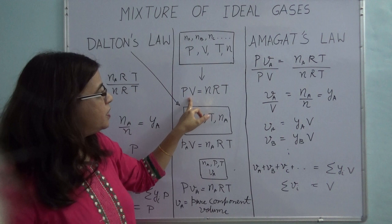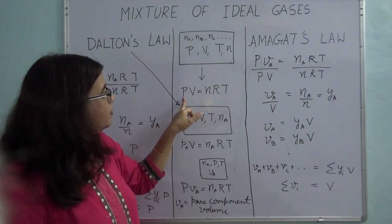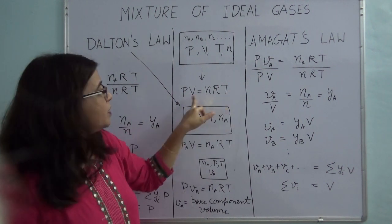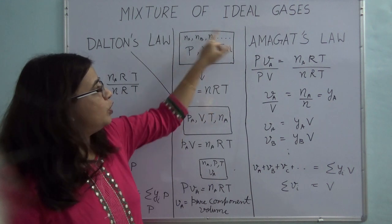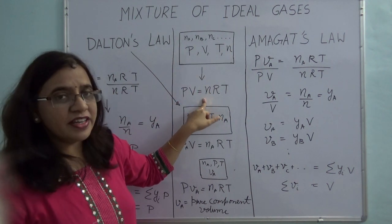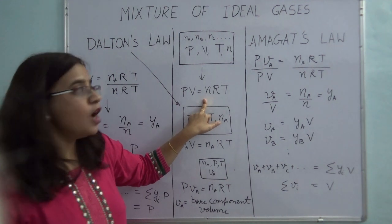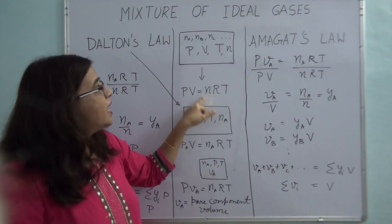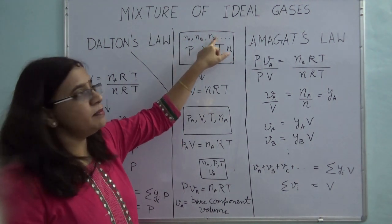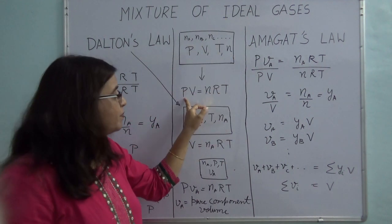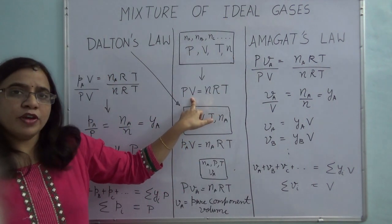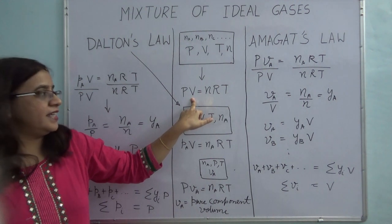I have written down PV = NRT, where pressure is P, temperature is T, V is the volume occupied by the mixture, and N is the total number of moles of gas — equal to Na + Nb + Nc and so on. So I can write the ideal gas equation for a mixture of ideal gases.